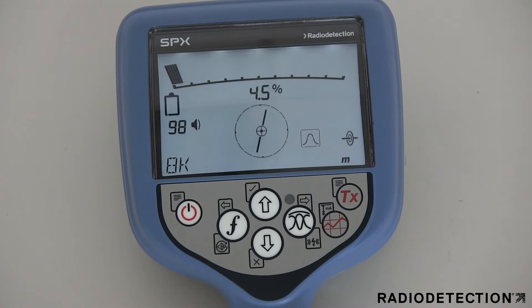The locator display provides a battery level indicator. When battery replacement is necessary, the display shows a flashing battery icon.